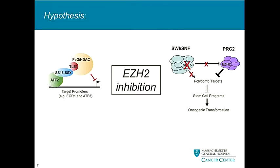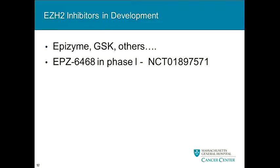The obvious question is: what happens if you bring in an EZH2 inhibitor — an epigenetic target? Can we reverse this overactivity of EZH2, either through SS18-SSX recruitment or through dysregulation? As a clinician, I wanted to get these drugs into our patients as soon as possible. Companies like Epizyme and GSK have these in development, and we were eager to use them.